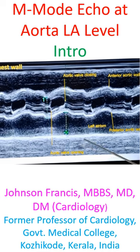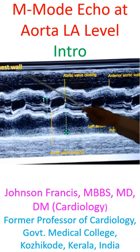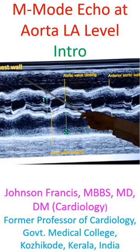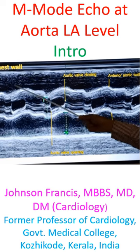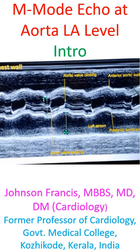This is the anterior chest wall. Just below that is the right ventricular free wall, and the RVOT region is seen here. This is the anterior wall of the aorta, and this is the posterior wall.